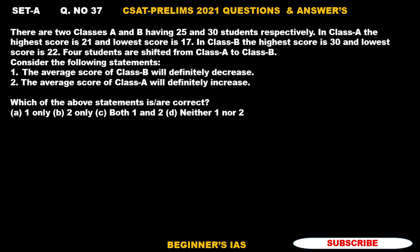There are two classes A and B having 25 and 30 students respectively. In class A, the highest score is 21 and the lowest score is 17. In class B, the highest score is 30 and the lowest score is 22.